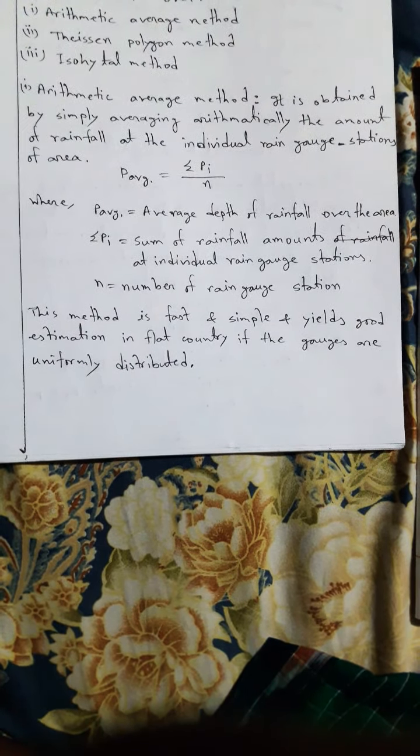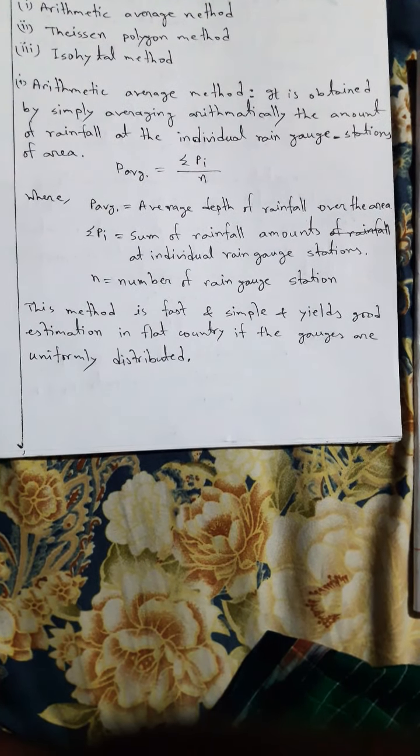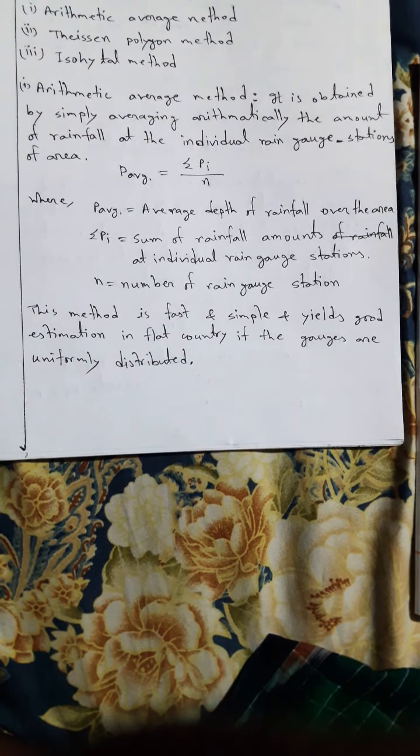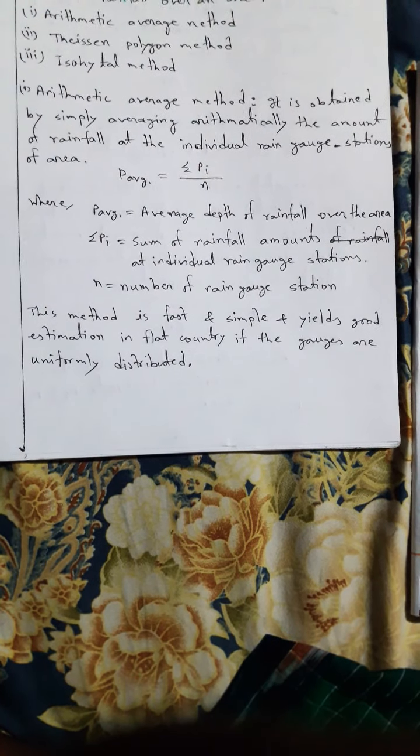P average equals summation of P divided by n, where Pi equals the sum of rainfall amounts at individual rain gauge stations and n equals the number of rain gauge stations.